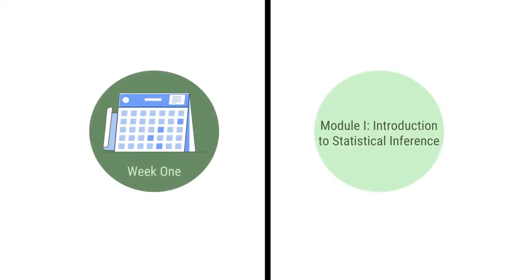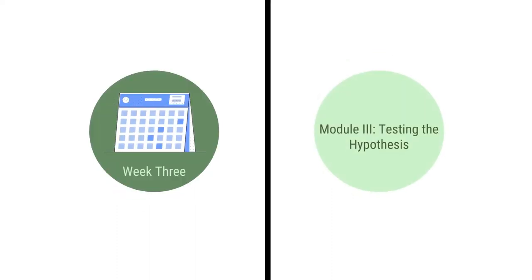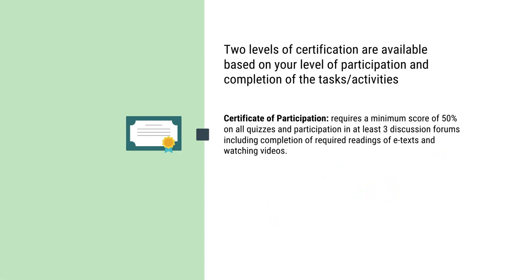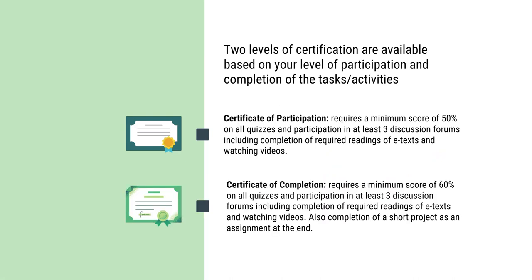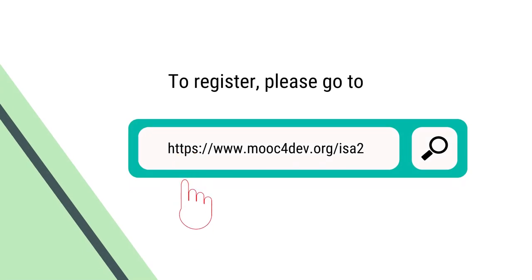The course comprises four different modules: Module 1, Introduction to Statistical Inferences; Module 2, Significance of Mean; Module 3, Testing the Hypothesis; Module 4, Difference Between Two Means. There are two levels of certification in this course: Certificate of Participation and Certificate of Completion. For registration, please log into the details as given on your screen. There is no registration fee and no course fee. Look forward to seeing you in the course platform. Wish you successful learning.